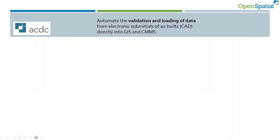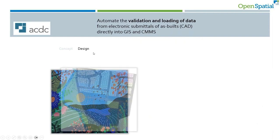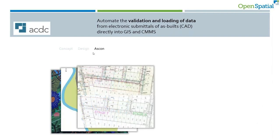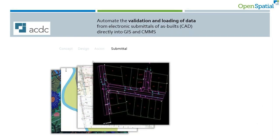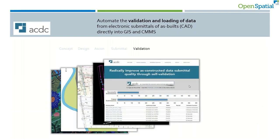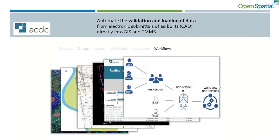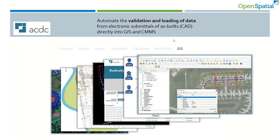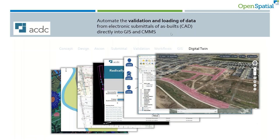ACDC automates the validation and loading of as-built data. In the as-built process you go through concept, design, and then as-constructed — typically done in a CAD environment. We slightly modify that process so you can also provide attribution as attributed blocks rather than text on the drawing. You can submit to a portal, validate the information, and run a workflow that notifies groups within the organization, ending up in your GIS and optionally incorporated into a digital twin for 3D visualization and planning.